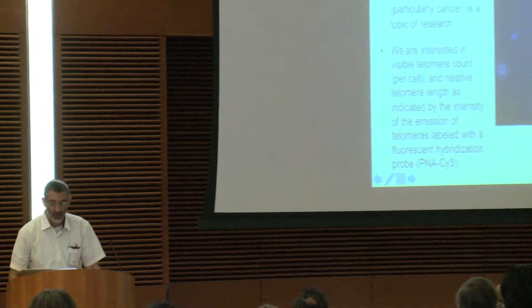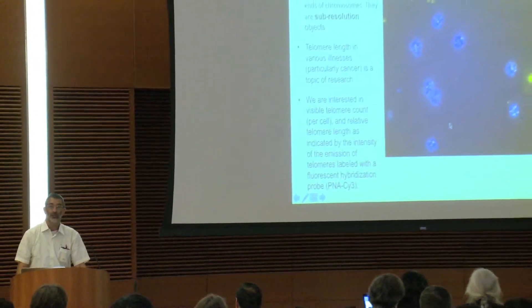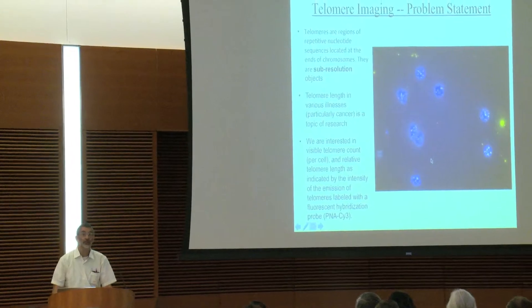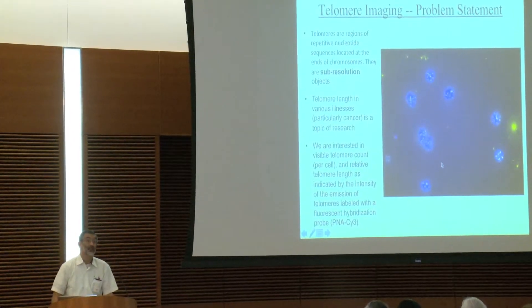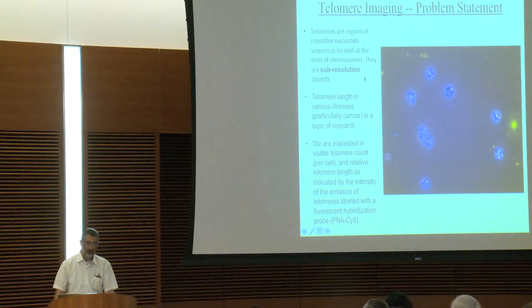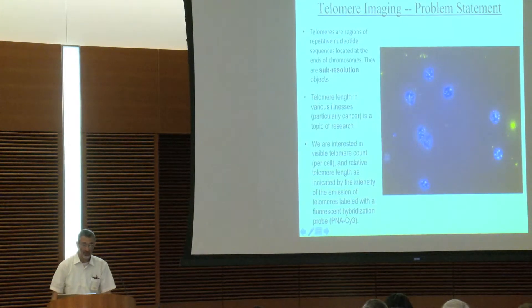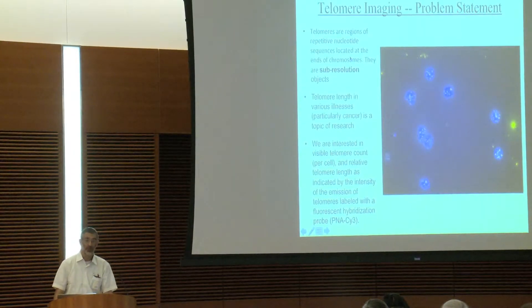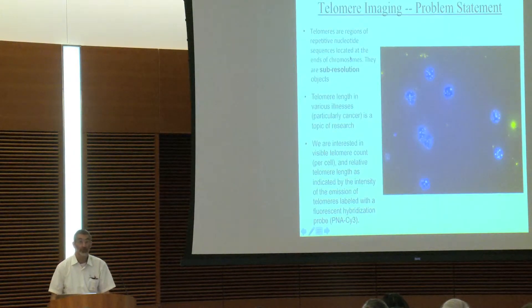Okay. So the problem statement. We have cells. These are primary human lymphocytes. There are theories that say that telomere length can be an indication, possibly a diagnostic tool. Telomeres are basically nucleotide repeats at the end of chromosomes every time cells reproduce.